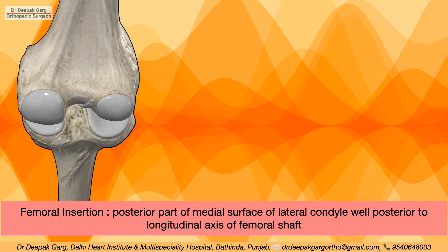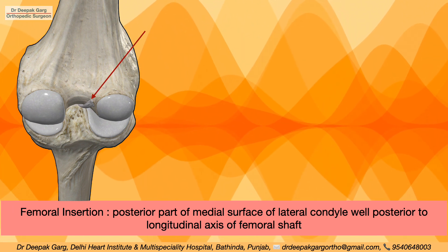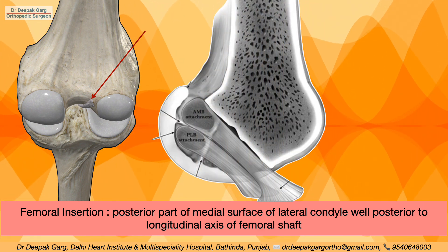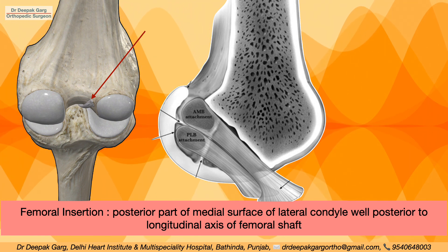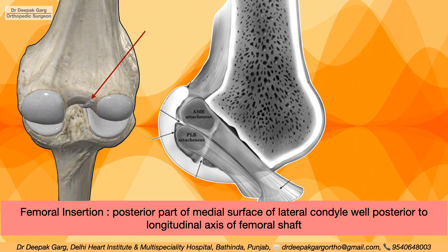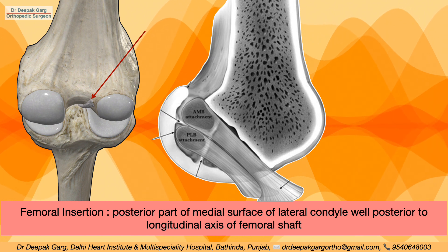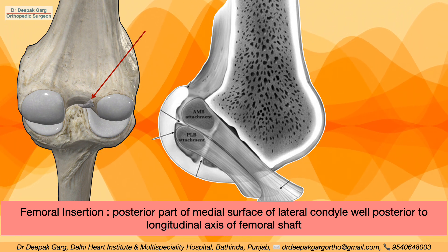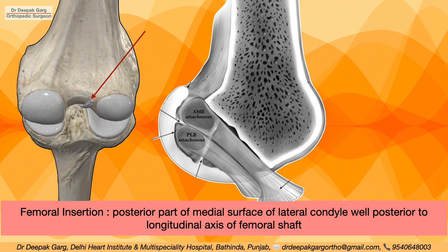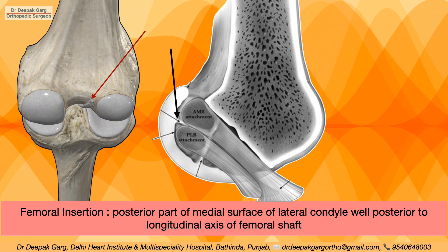If we look at the insertion of the ACL on the femur, it is inserted on the medial surface of the lateral femoral condyle and is well posterior to the longitudinal axis of the femoral shaft. Both the anteromedial and posterolateral bundles insert on the posterior surface of the medial part of the lateral femoral condyle, making a linear horizontal line. This linear elevation on the bone is called the resident's ridge.